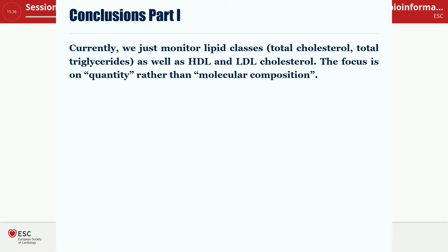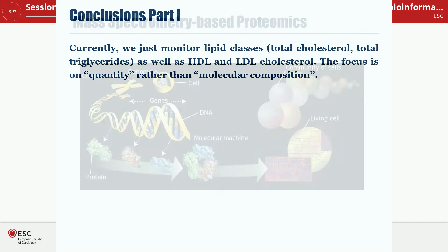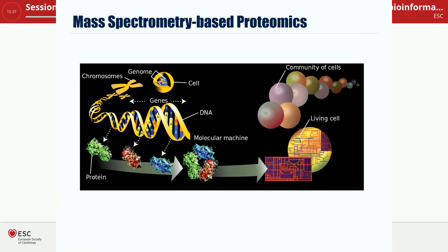Currently we just monitor lipid classes such as total cholesterol and total triglycerides. For cholesterol we look at HDL and LDL, but the focus is often on quantity rather than molecular composition. I think we will see additional measurements for cardiometabolic profiling in the future. The problem of course is cost-effectiveness — it's not going to be affordable to measure hundreds of lipid species in a clinical setting. Therefore, the question is whether some of this information captured at the metabolite level could also be captured at the protein level.